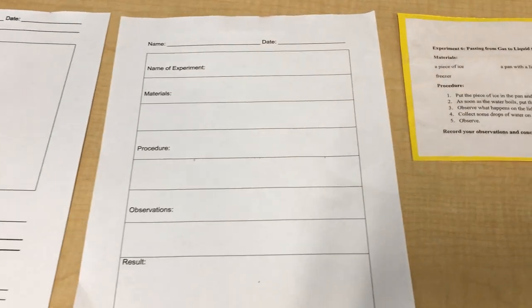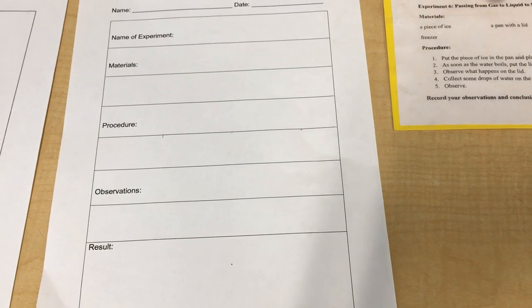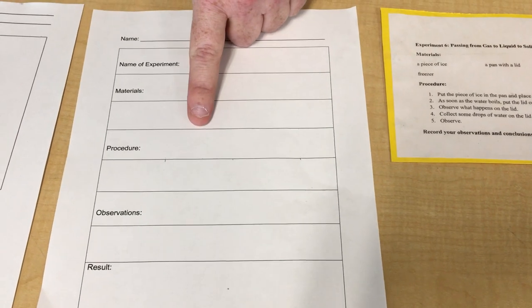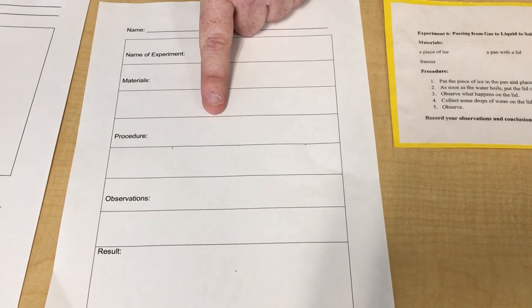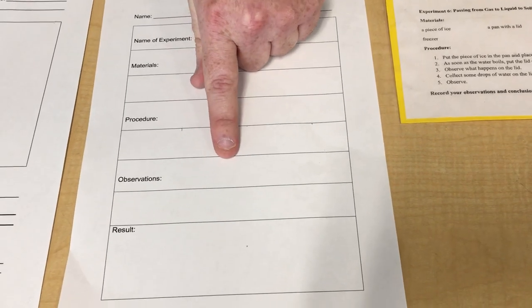For second and third graders, a little bit more information. What's the name of the experiment? What are the materials that we used? What's the procedure? Procedure means what did we do? That's the steps of what we did in the experiment.